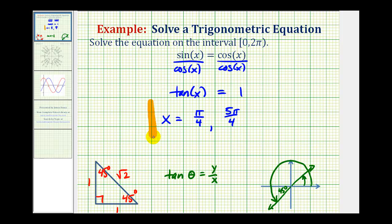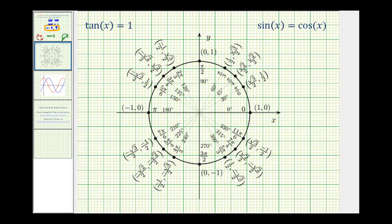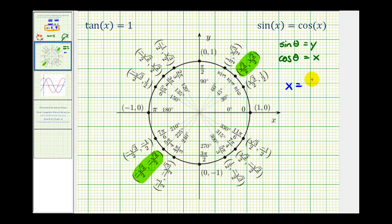So those are our solutions on the given interval. Let's also solve this using the unit circle. Our original equation was sine x equals cosine x. On the unit circle, sine theta equals y and cosine theta equals x, so we want to find where the y coordinate equals the x coordinate. At pi over four radians, the x and y coordinates are equal, so sine theta and cosine theta are equal. At five pi over four radians, the x and y coordinates are also equal. So from the unit circle, our solutions are x equals pi over four radians and x equals five pi over four radians.